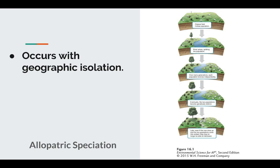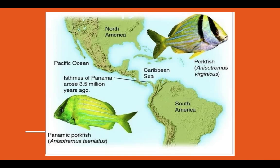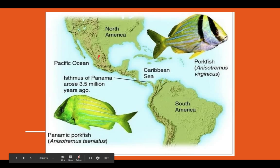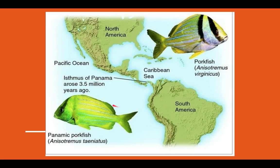Looking at the evolution of new species — allopatric speciation. 'Allos' is Greek for 'other' and 'patric' means fatherland, so this occurs where you have geographic isolation. A perfect example is the porkfish. About three and a half million years ago, North America and South America were bridged by the Isthmus of Panama. Prior to that, organisms could travel between the Pacific Ocean, Caribbean Sea, and Atlantic. But when the isthmus was volcanically and geologically created, it cut off these porkfish species, resulting in the evolution of two new species. This isolation could also be a mountain range or a river — any geographic feature separating species and allowing them to evolve separately.